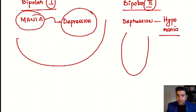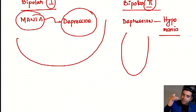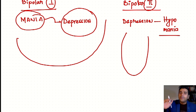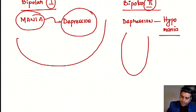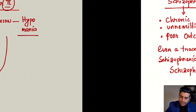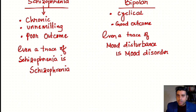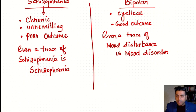In Bipolar Type 1, there will be mania, a normal phase, and then typical depression. In Bipolar Type 2, there will be depression followed by hypomania. Another important concept about Schizophrenia and Bipolar will now be discussed.